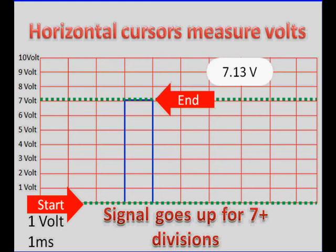We could do the same thing with voltage. Now this signal goes up a little more than seven divisions. We put our line up there. It says 7.13 volts. Now it's important to remember that on most scopes, the starting spot is assumed to be zero volts automatically. You don't have to position it.